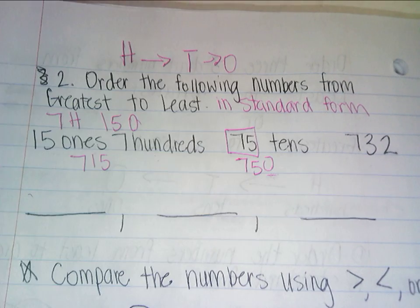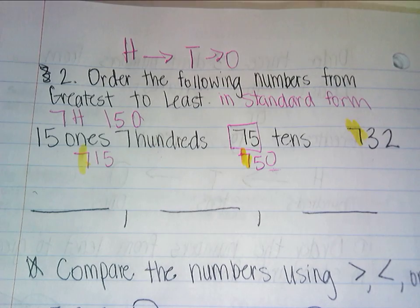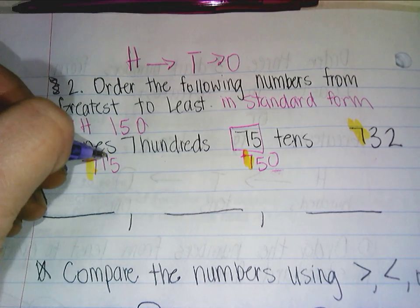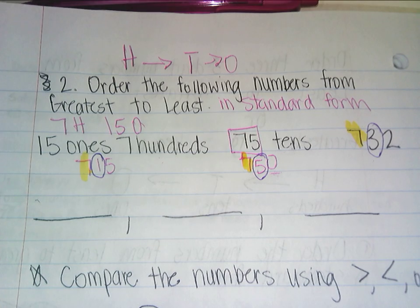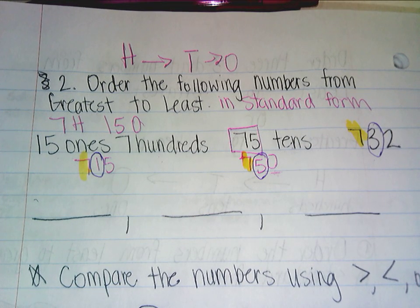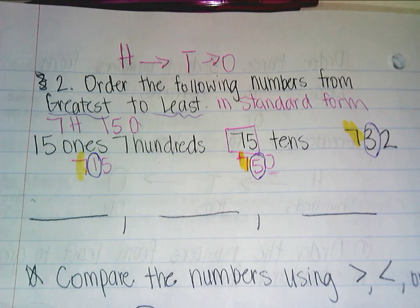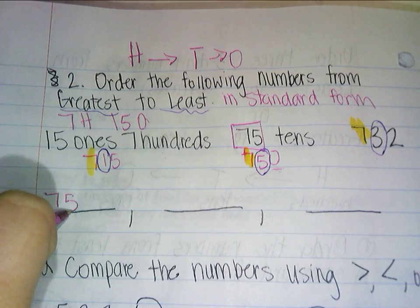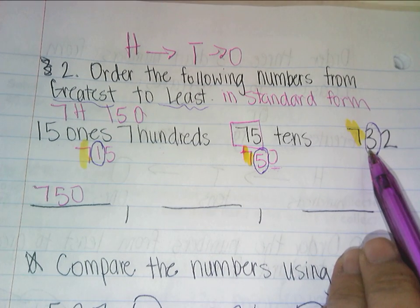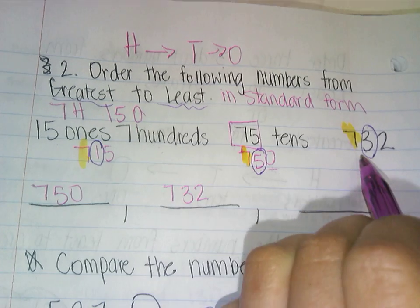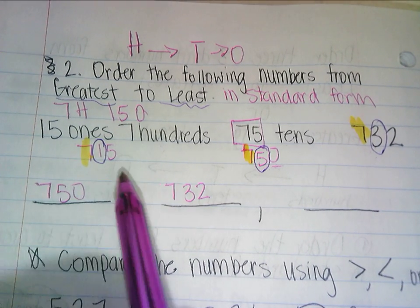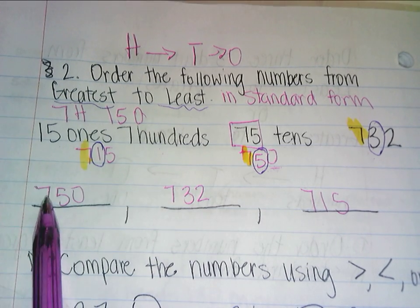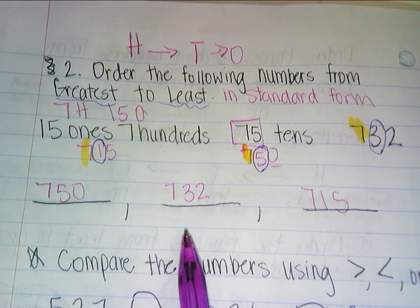I've got to look at the digits in the hundreds place. This time I have 7 in the hundreds in all three numbers. So I move on to the tens place. I have a 1 in the tens place, a 5 in the tens place, and a 3 in the tens place. I want greatest to least, so the highest number is 750 because 5 tens is greater than 3 tens and 1 ten. The next number is 732, and then 715 is last. It goes 750, 732, 715 — greatest, then lower, then least.